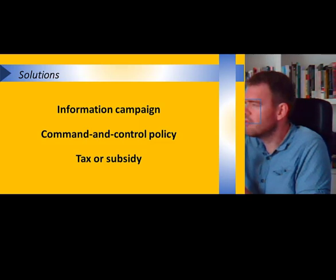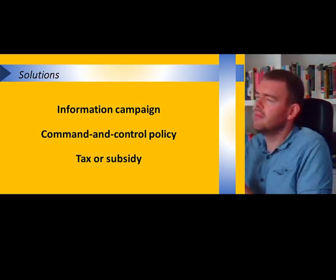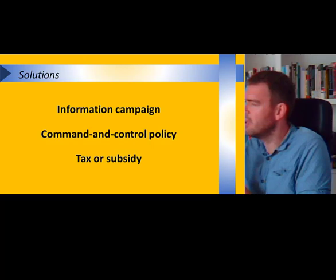So what can be done about externalities? Technically there are three potential solutions. The first, which is the most flexible one, would be information campaigns. Sometimes people would care about the cost that they cause for other people — they just don't know that this negative externality exists. If I would know that my neighbors dislike it when I record videos in my backyard, I might be willing to take that into account and record the video elsewhere.